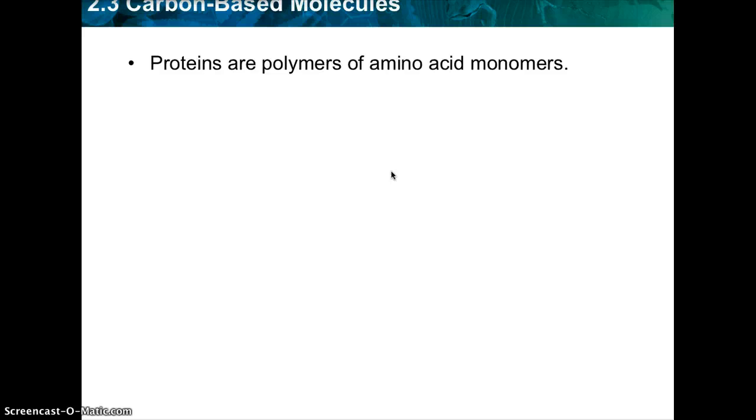So proteins are polymers of amino acid monomers. And there's about 20 different amino acids that are used to build proteins in organisms.